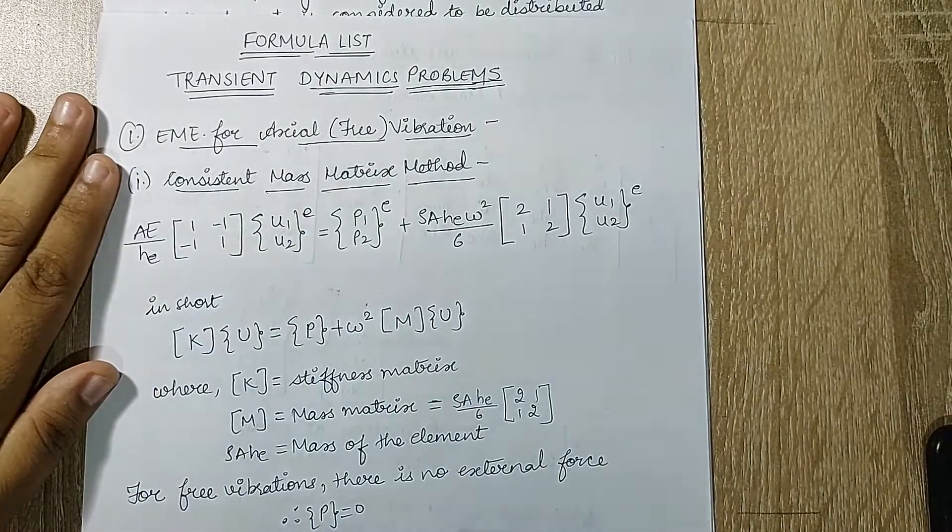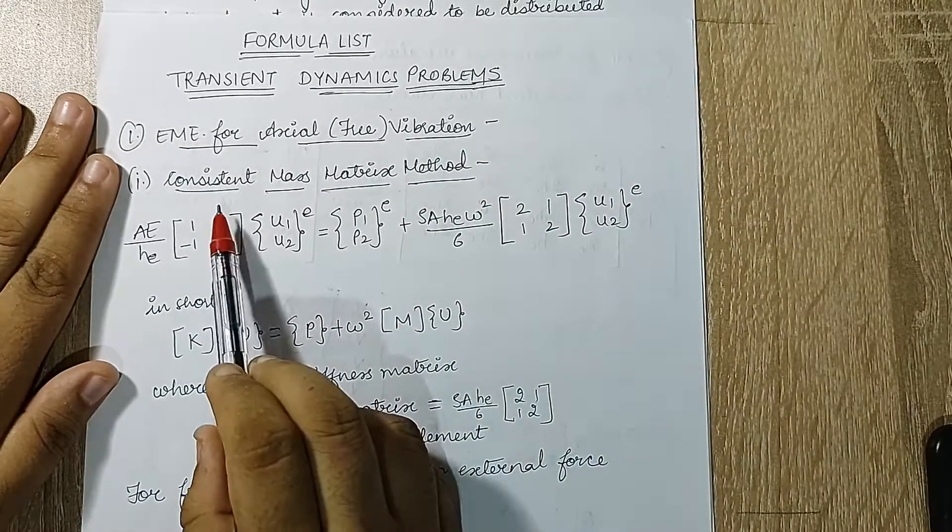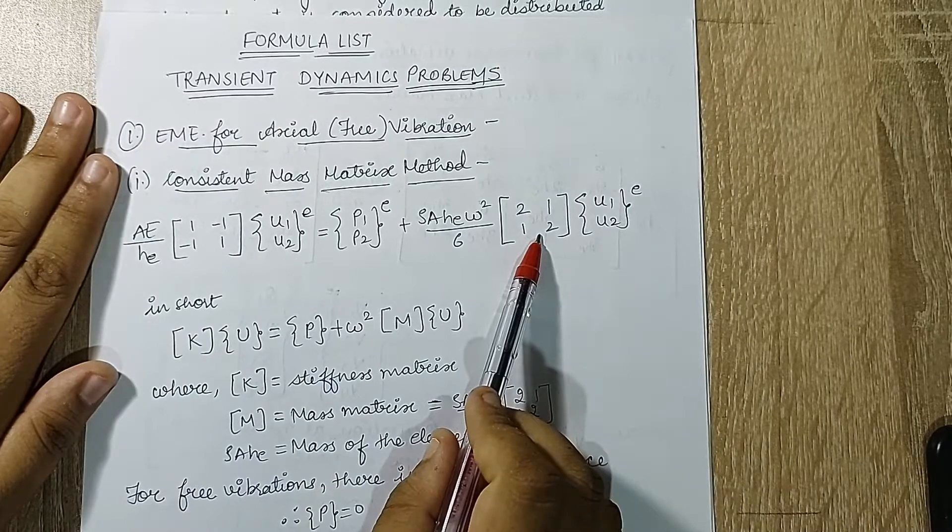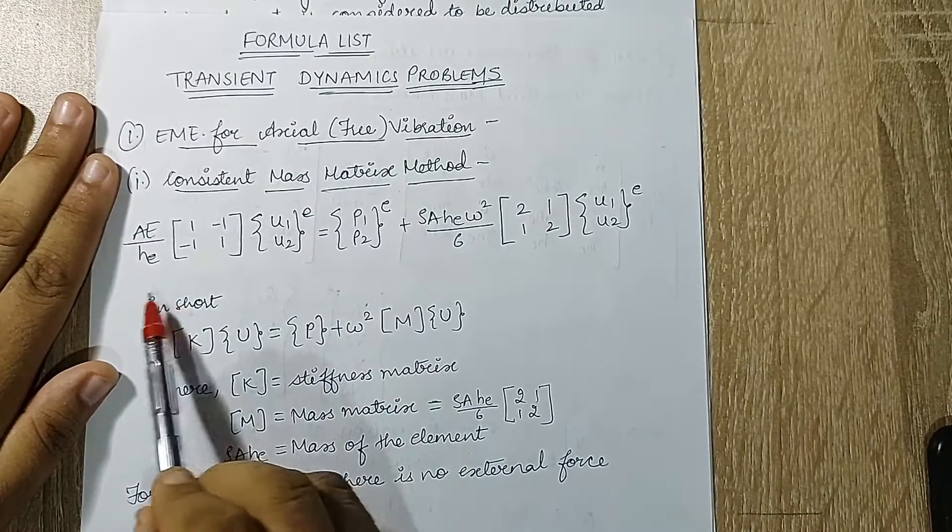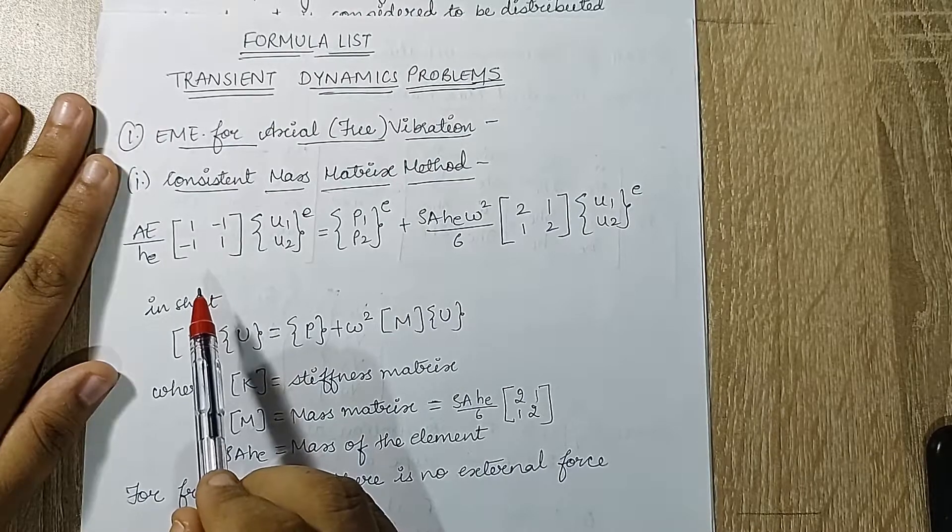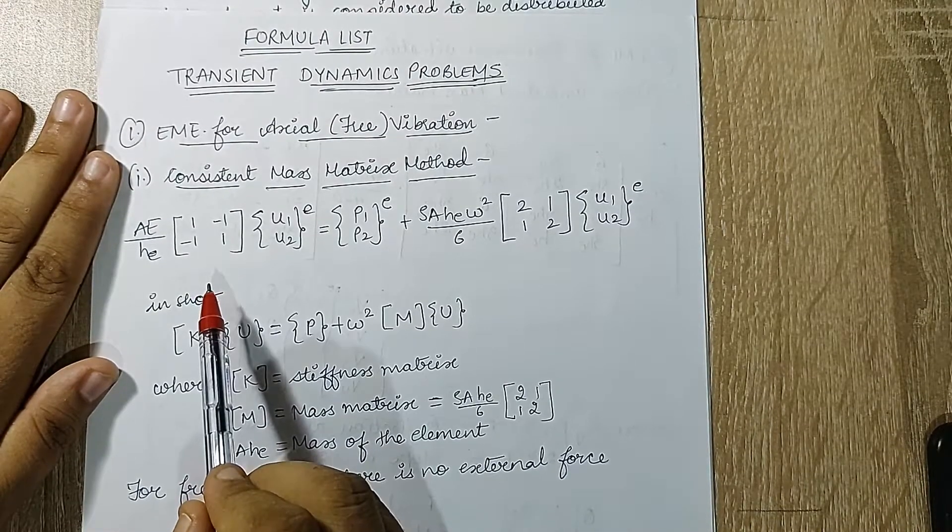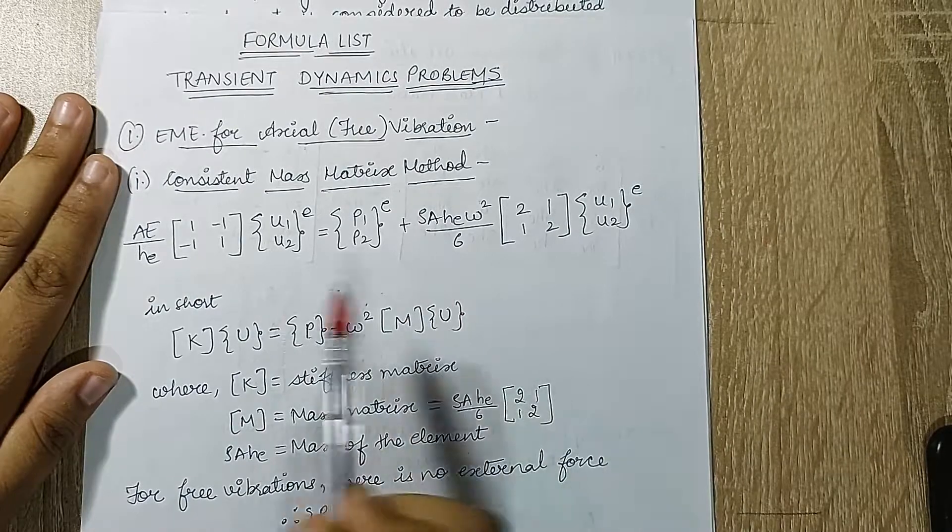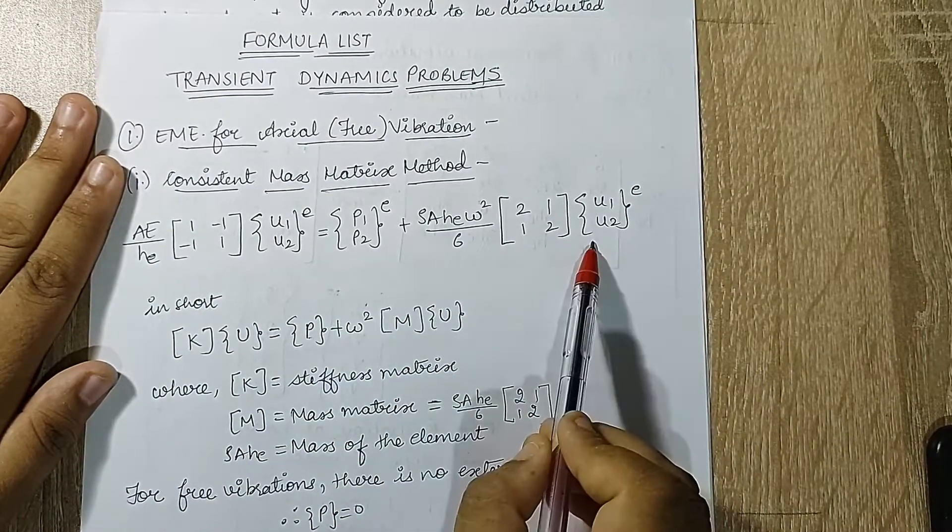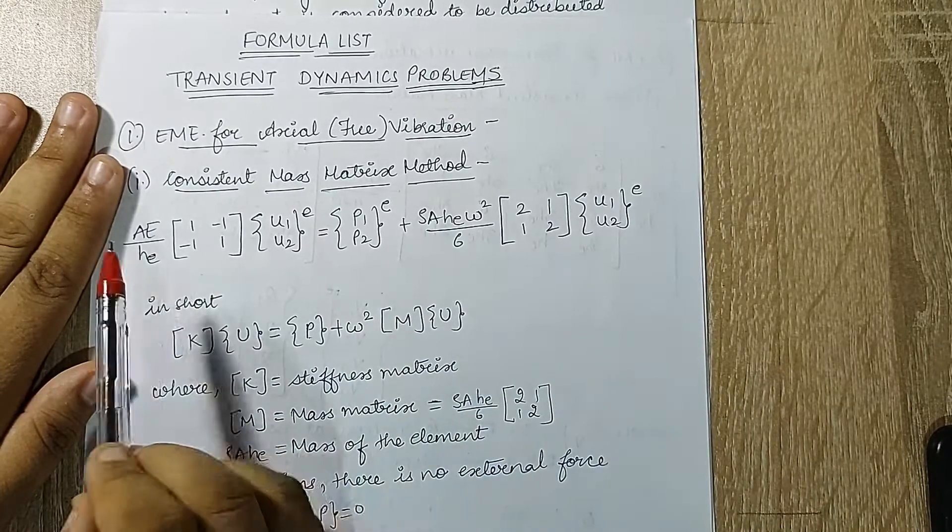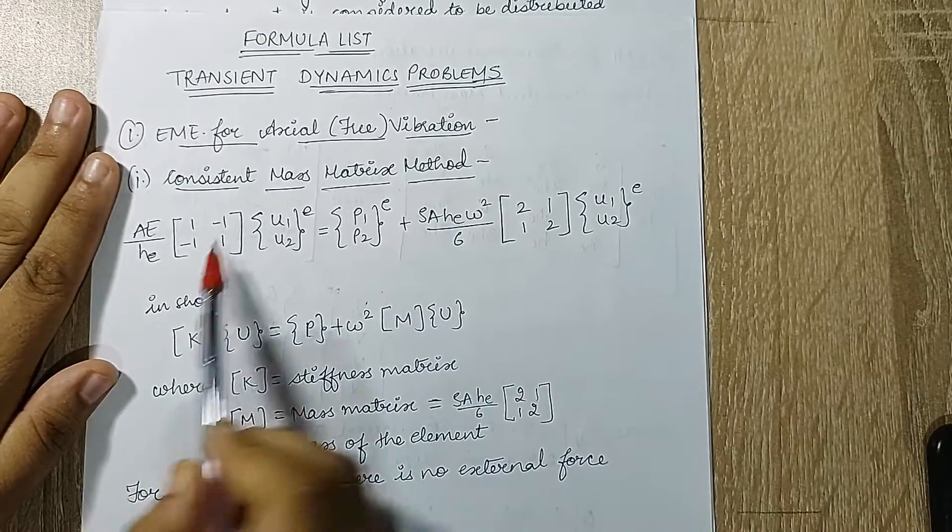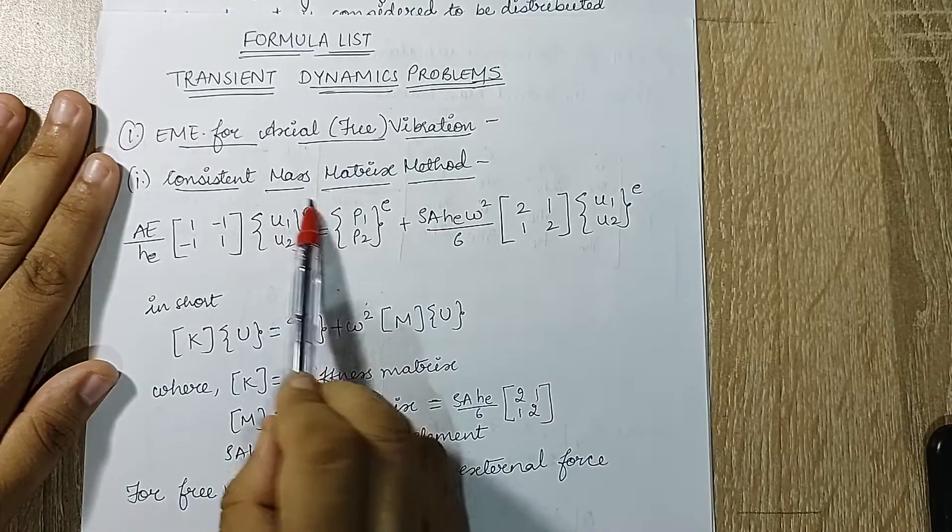This can be solved by two methods as we have discussed. First we will talk about consistent mass matrix method. This equation is a little different from the direct application of FME type of numerical which you have solved. There you had equations on both the sides but you did not have this variable on both the sides.